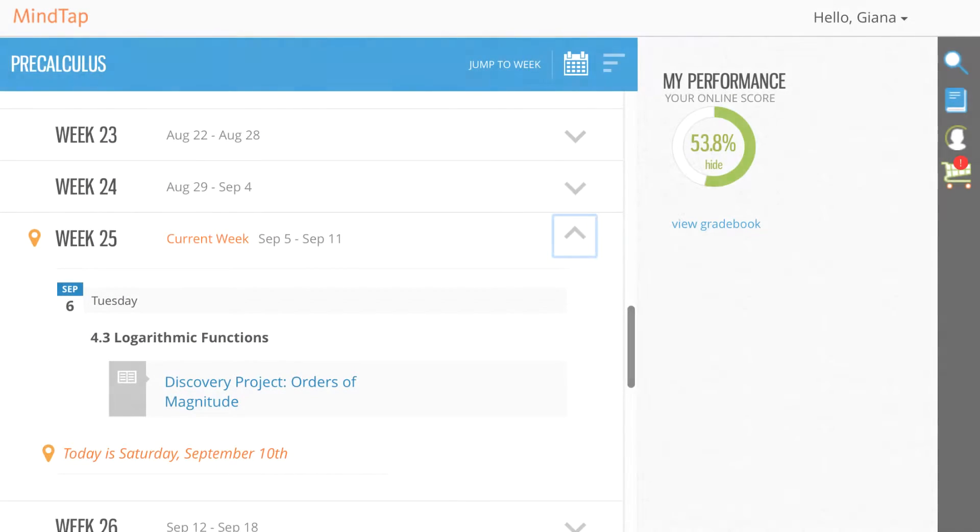When you log into MindTap, you have two options for viewing your learning path. By default, your learning path opens to the week view, allowing you to review which activities are assigned by your instructor each week. Click the arrows to the right of the corresponding week to expand and condense its details.